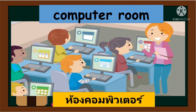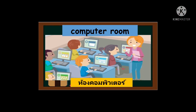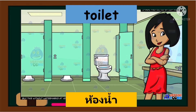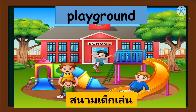Next, the computer room. Let's spell: C-O-M-P-U-T-E-R R-O-O-M, computer room. Next, toilet. Let's spell: T-O-I-L-E-T, toilet. Very good! Next is the playground. Let's spell: P-L-A-Y-G-R-O-U-N-D, playground.